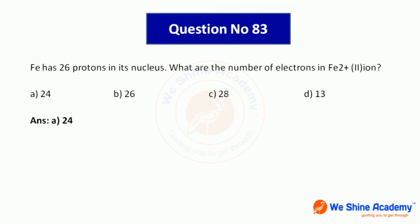Question number 83: Iron (Fe) has 26 protons in its nucleus. What is the number of electrons in Fe²⁺ iron? Fe²⁺ means iron has lost 2 electrons, so electrons = 26 minus 2. Answer is 24.